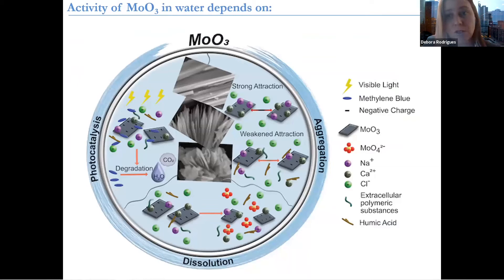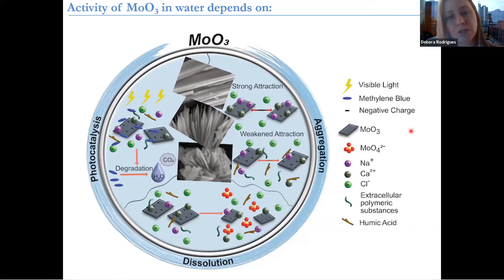When we look at the activity of MoO3 in water, we know that most nanomaterials really depend on aggregation and dissolution to be active, and it's not different for MoO3. So what we did is use different salt concentrations with ionic strength, as well as organic matter. One organic matter — the extracellular polymeric substance — came actually from bacteria, was extracted from bacteria, so it was really biological, while the humic acid came from Sweeney River, so it's available in environmental water.